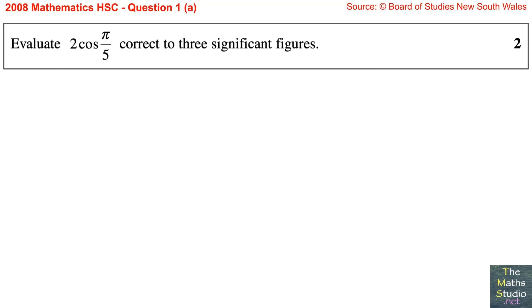Question 1, part A. Evaluate 2 cos pi over 5, correct to 3 significant figures.